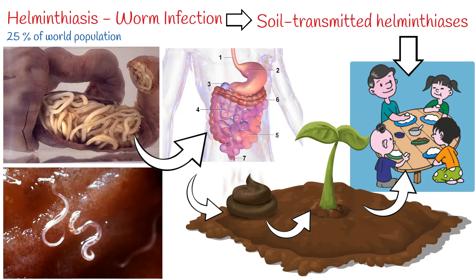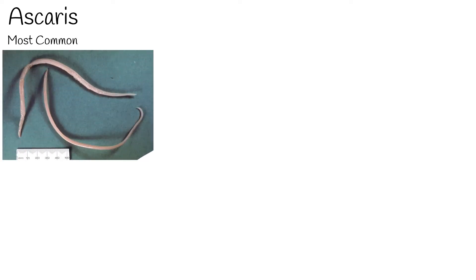This can happen when hands or fingers that have contaminated dirt on them are put in the mouth, or by consuming vegetables and fruits that have not been carefully cooked, washed, or peeled. Three most common soil-transmitted worms exist: Ascaris, the most common, which infects more than a billion people in the world; the second most common is whipworm; and the third is hookworm.